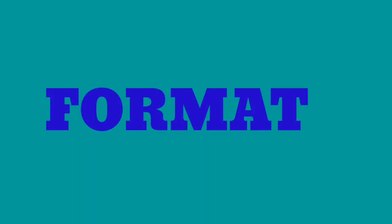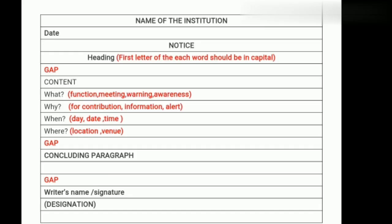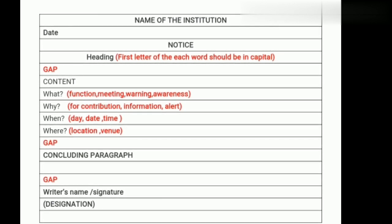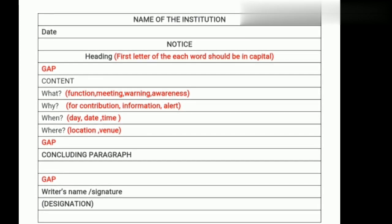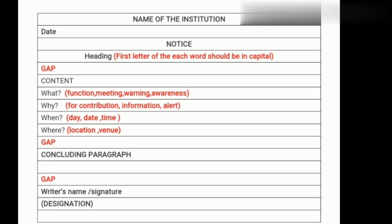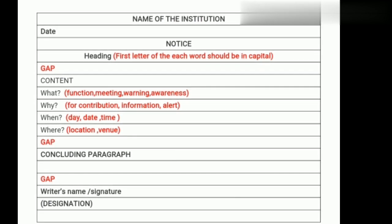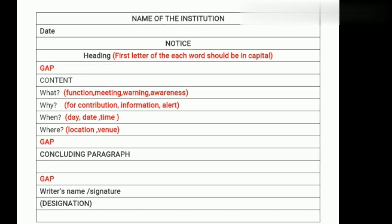Let's have a look at the format. Students, at first we have to write the name of the institution, then comes the date, then 'Notice', then the heading of the notice. After that we will give a line gap, and then comes the content.